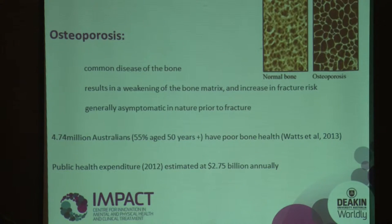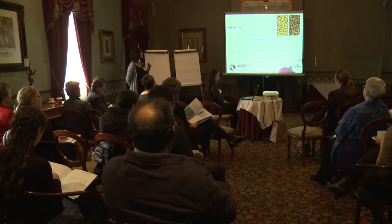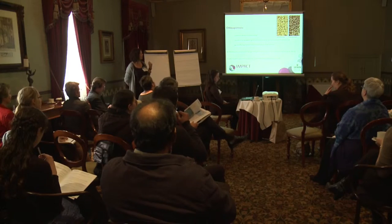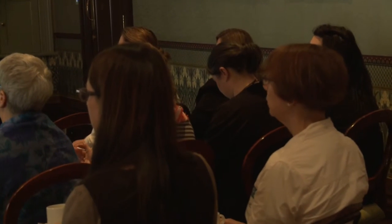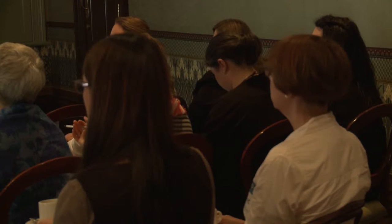The other disease is osteoporosis — also a musculoskeletal disease, a disease of the bone that results in weakening of the bone matrix. You can see a normal bone compared to the porous, degraded osteoporotic bone. A lot of people are affected at age 50 and over, with public health expenditure of 2.75 billion dollars annually. Whilst we see a social gradient in many diseases, there's not much evidence to show it also exists in musculoskeletal disorders.